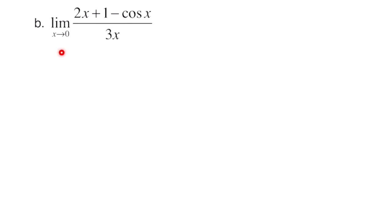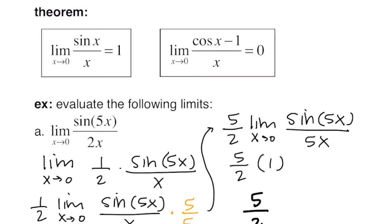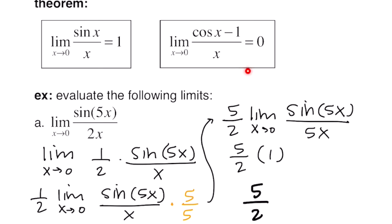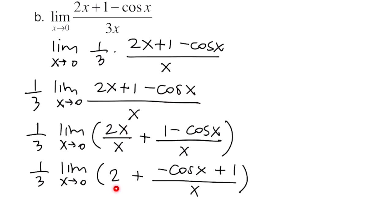The next example says the limit as x goes to 0 of 2x plus 1 minus cosine of x all over 3x. First, I rewrote the 1/3 in front of the fraction. Because of the cosine, we want to use the second theorem. So I split the fraction into two: 2x over x on the left, and 1 minus cosine x over x on the right. The 2x over x reduces to 2, and I rewrote the numerator as negative cosine x plus 1. Because we have a sum of functions, we rewrite this as the limit of the first function plus the limit of the second.